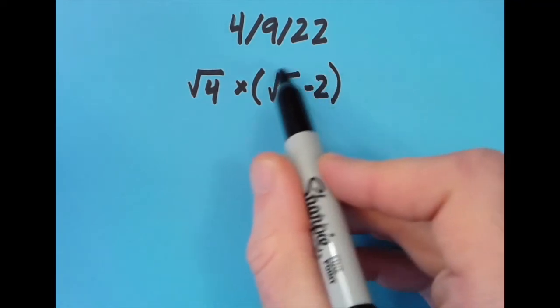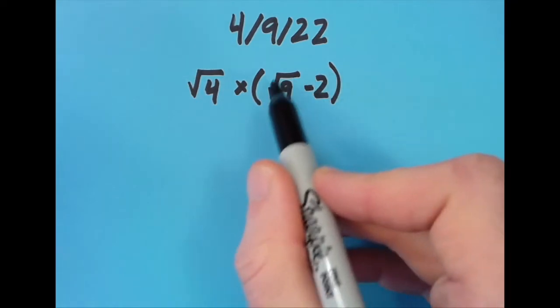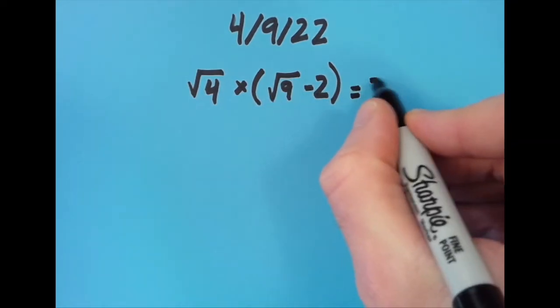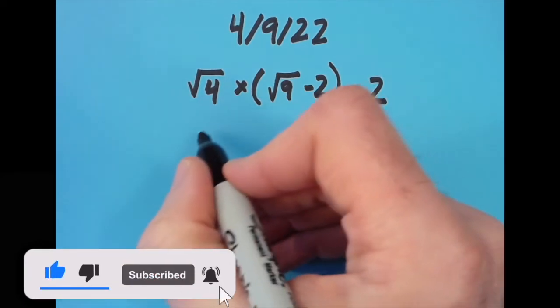√9 is 3, 3 minus 2 is 1, so I have 2 times 1 equals 2. So that's what I did. Then I said, well, can I do it with the equal sign in a different spot?